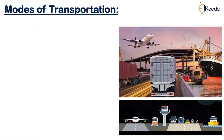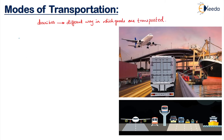Modes of transportation describes the different ways in which goods are transported. These modes of transportation have been divided into five categories, and there is a sixth one which is a mixture of all these five categories.